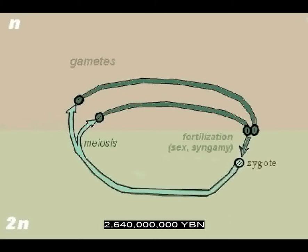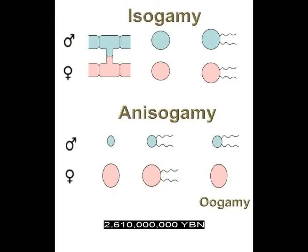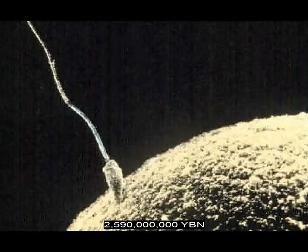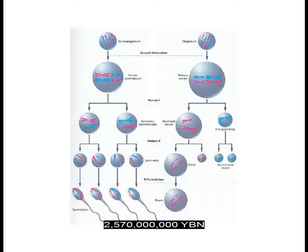Meiosis evolves. One-step meiosis: a single cell division of a diploid cell into two haploid cells. Meiosis, which looks similar to mitosis, is the process of cell division in sexually reproducing organisms that reduces the number of chromosomes in reproductive cells from diploid to haploid, leading to the production of gametes in animals and spores in plants. Without this reduction back to haploid, genomes would double in size with every generation. Gender in eukaryotes evolves—anisogamy, or sex, is cell and nucleus fusion between two cells that are different in size or shape. Oogamy, a form of anisogamy, evolves in protists—sex between a flagellated gamete and an unflagellated gamete. Two-step meiosis: diploid DNA copies and then the cell divides twice into four haploid cells. Most protists divide by two-step meiosis; one-step meiosis is rare.